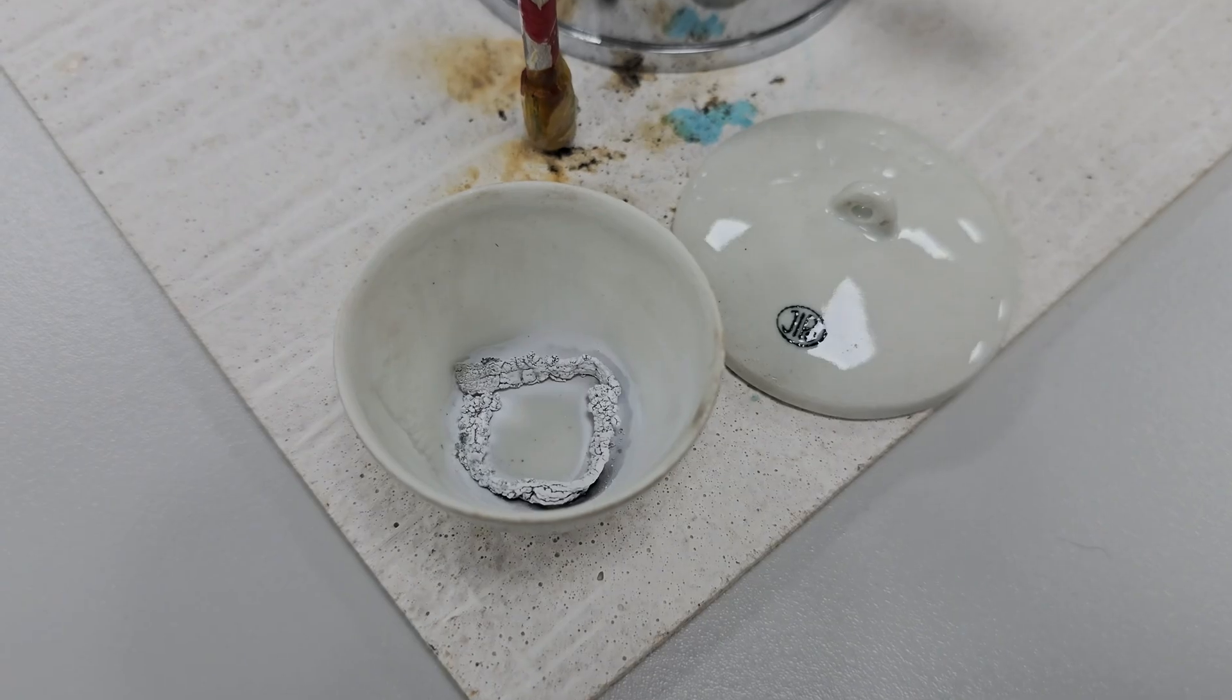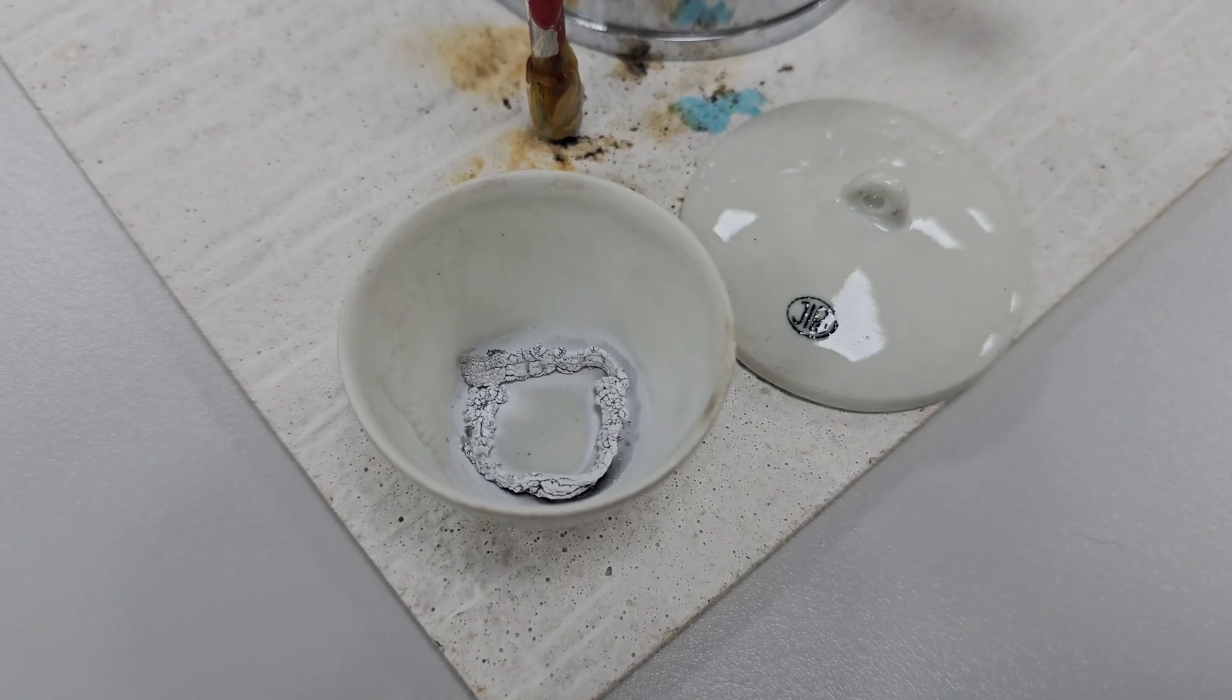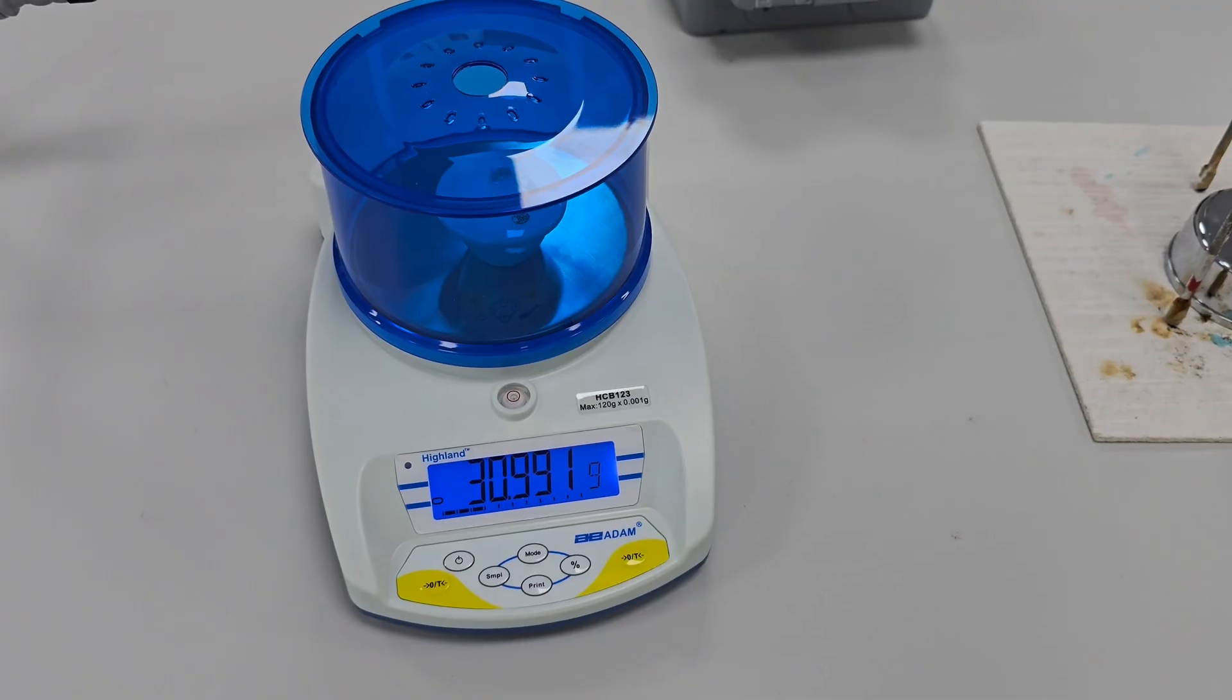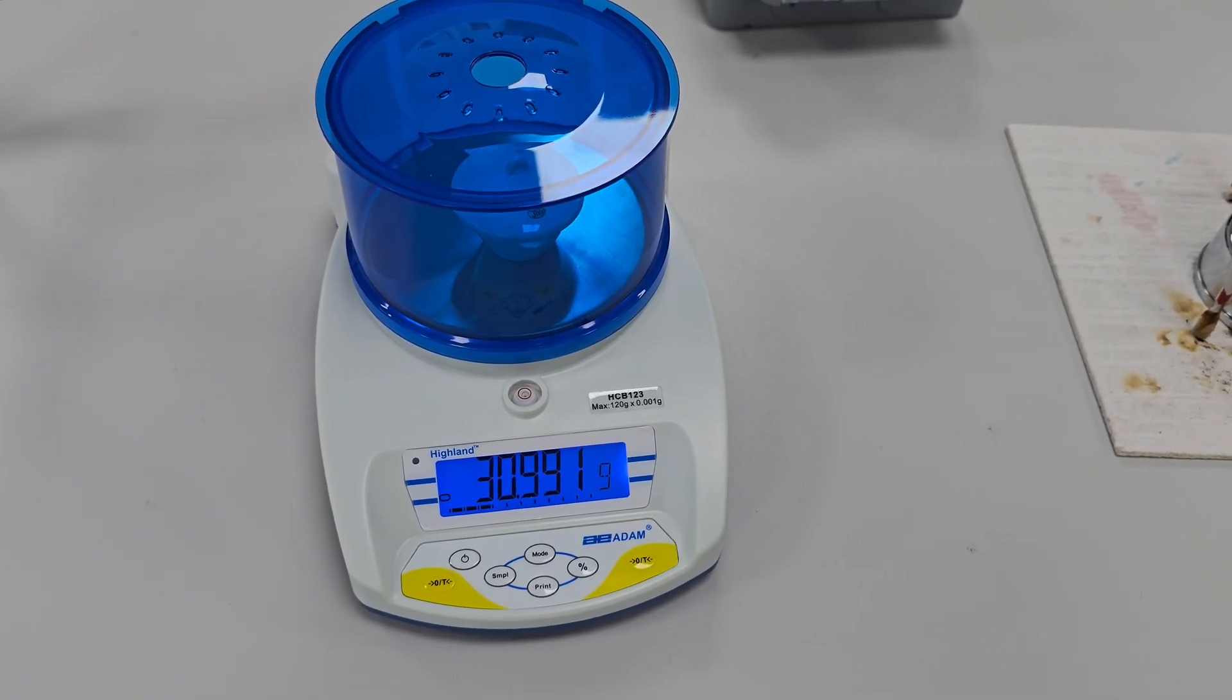Now that the crucible has cooled let's check the final mass of the crucible with the magnesium oxide. The combined mass is 30.991 grams.